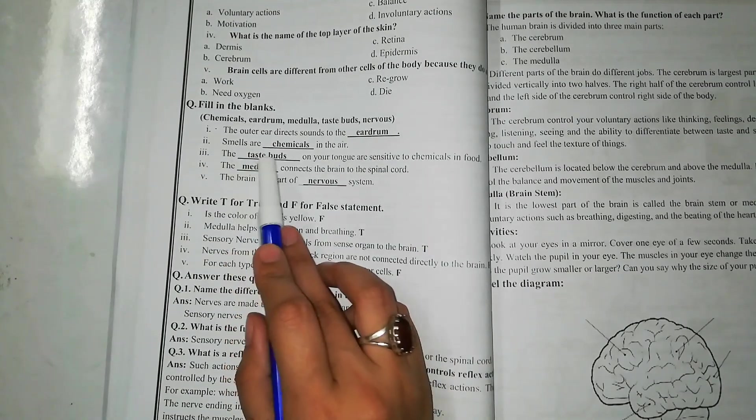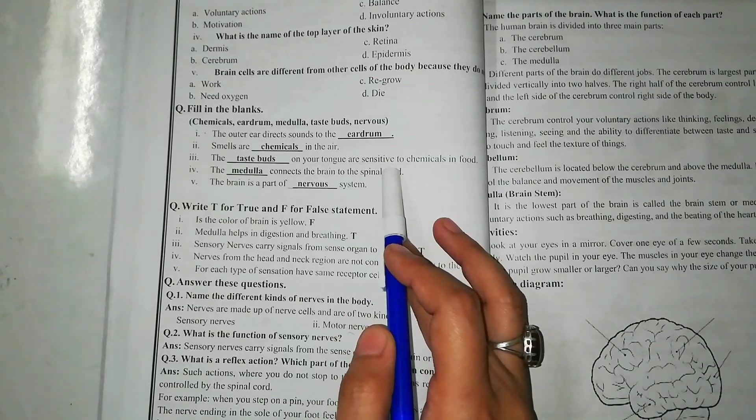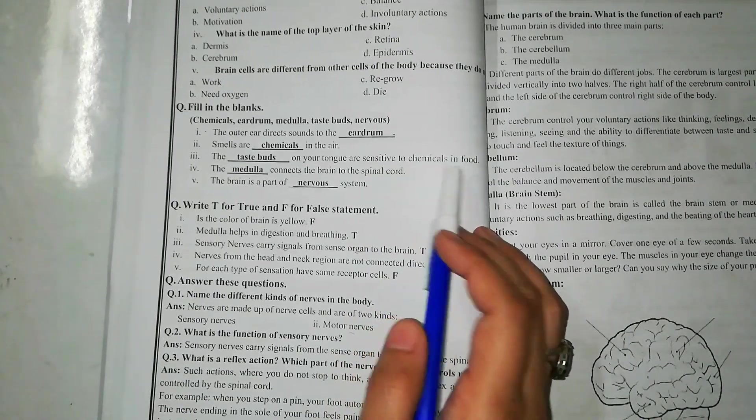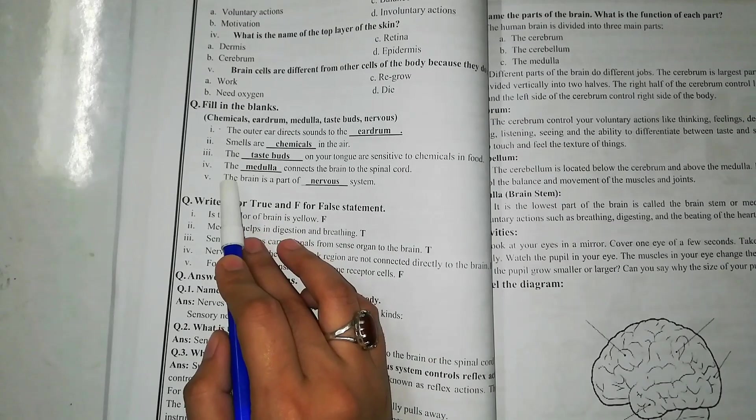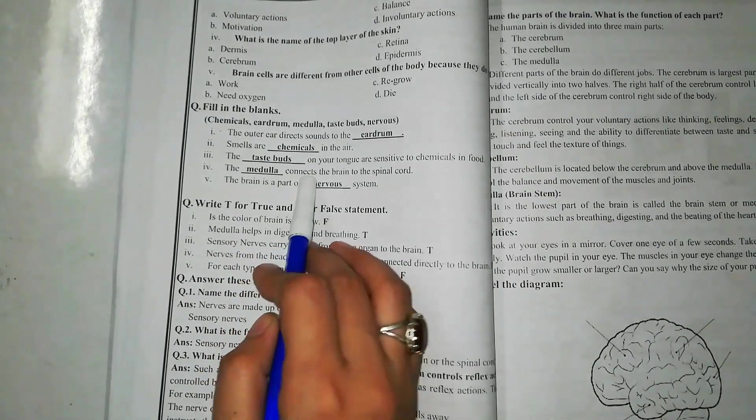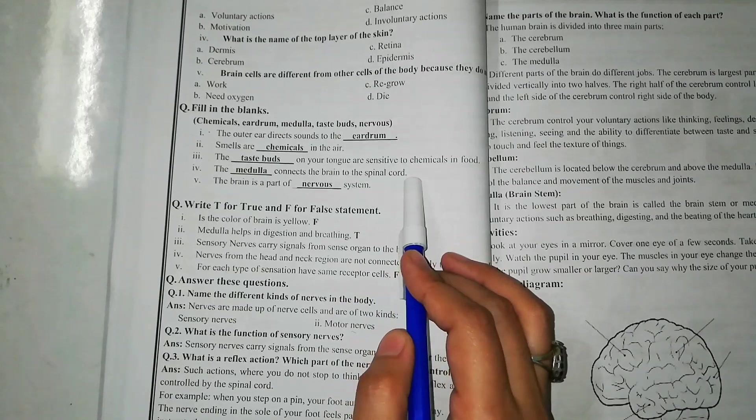The taste buds on your tongue are sensitive to chemicals in food. Fourth one: the medulla connects the brain to the spinal cord.